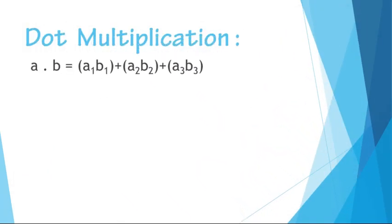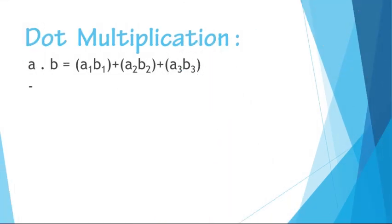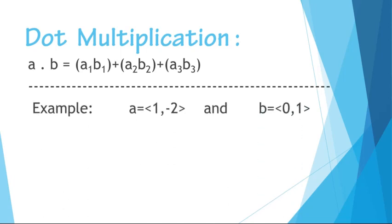Now we will see an example. Let a and b be two vectors with components (1, -2, 1) and (0, 2, 1). Then a·b is equal to -2, that is a scalar.